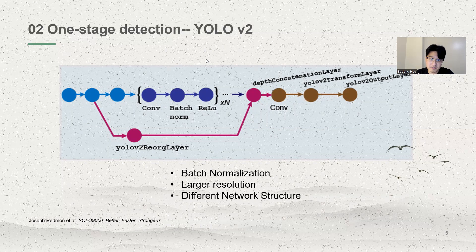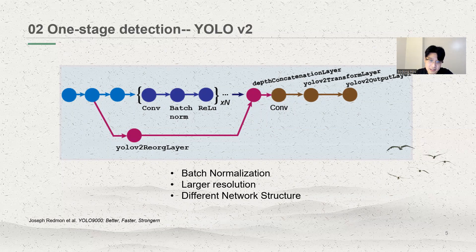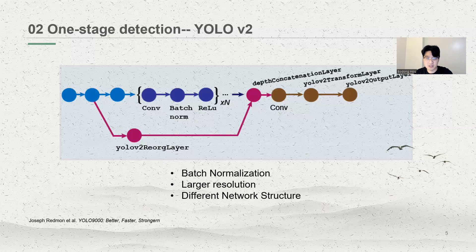From the current point of view, the batch normalization layer, also known as the BN layer, has become a must-have for the network, and this is a big improvement for the version two network. Each layer of the network is normalized, making it easier to converge. Darknet is the core network structure of version two, named by the author. Without the FC layer, overfitting is avoided and it's more efficient.